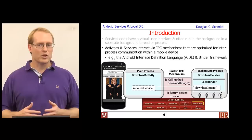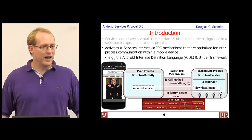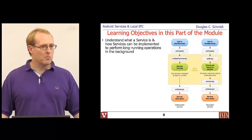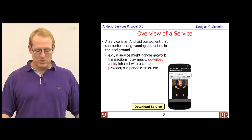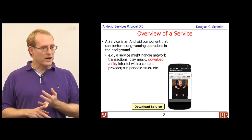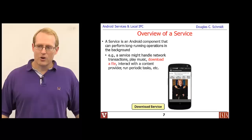We're going to spend some time talking about services, and as we discuss different kinds, you'll understand why we have a variety of IPC mechanisms to interact between them. The first part of this module gives an overview of what a service is, not unlike our earlier discussions about activities. A service is an Android component — just like activities, content providers, or broadcast receivers — one of the four core components of the Android application architecture.